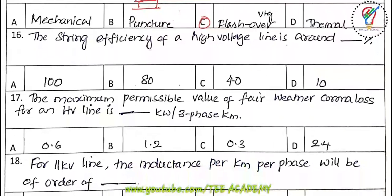Sixteenth question: the string efficiency of a high-voltage line is around 80 percent.